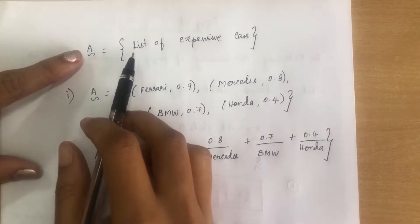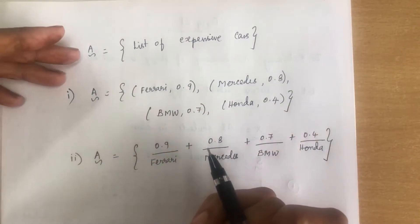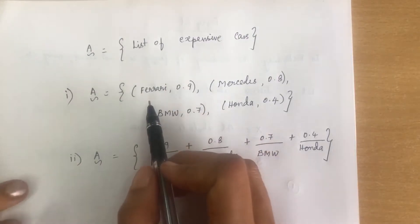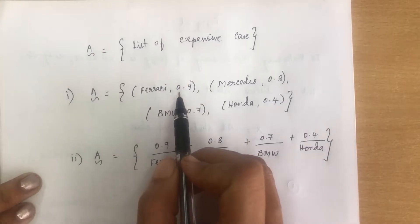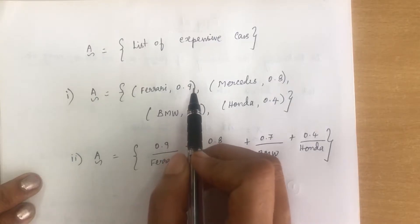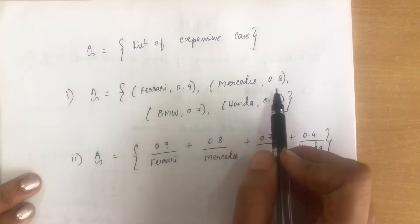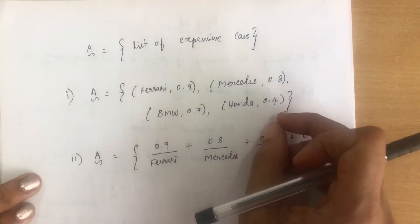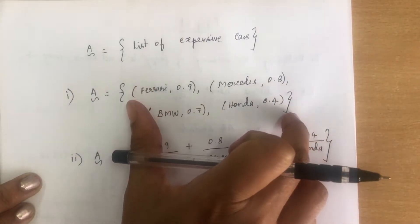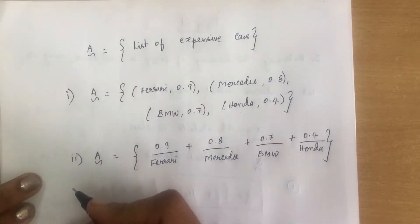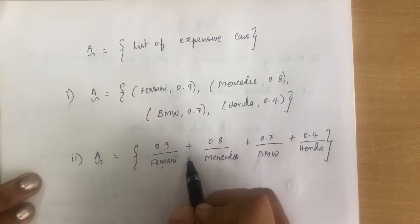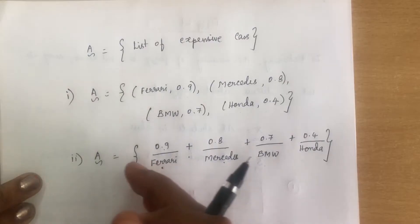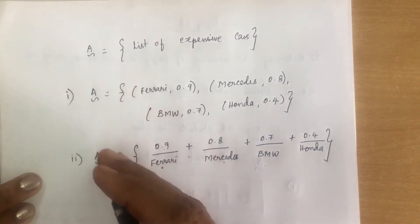Let me explain with one more example. Fuzzy set A contains a list of expensive cars: Ferrari, Mercedes, BMW, and Honda. Using the ordered-pair method: A = {(Ferrari, 0.9), (Mercedes, 0.8), (BMW, 0.7), (Honda, 0.4)}. Using the fraction method: A = 0.9/Ferrari + 0.8/Mercedes + 0.7/BMW + 0.4/Honda. Both representations refer to the same fuzzy set; you may follow either way of writing.